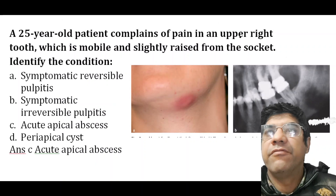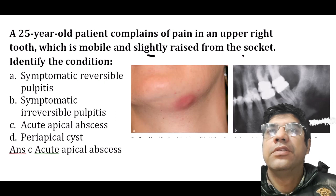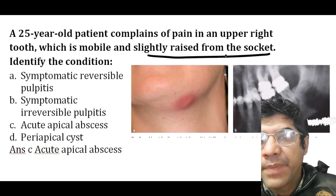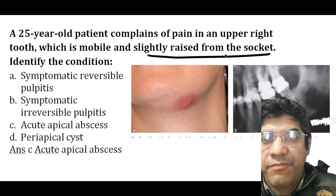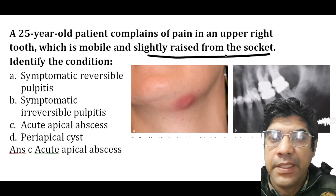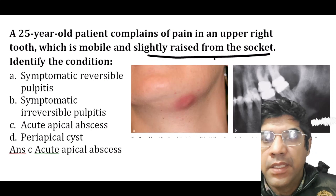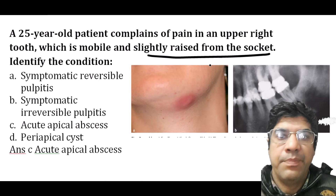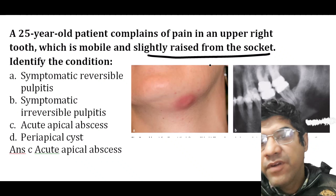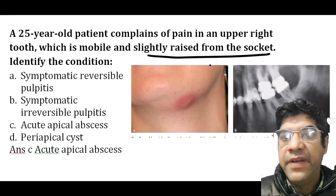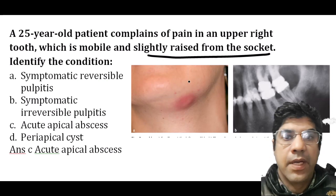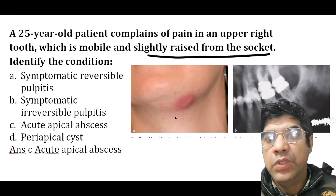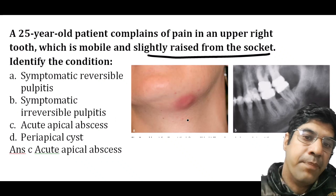A 25-year-old patient complains of pain in the upper right tooth that is mobile and slightly raised from the socket. The condition is acute apical abscess — a localized collection of pus at the root apex of the tooth, usually caused by bacterial infection. The patient experiences severe pain, tooth mobility, and the tooth may feel slightly raised or elevated in the socket due to the accumulation of pus and inflammation.